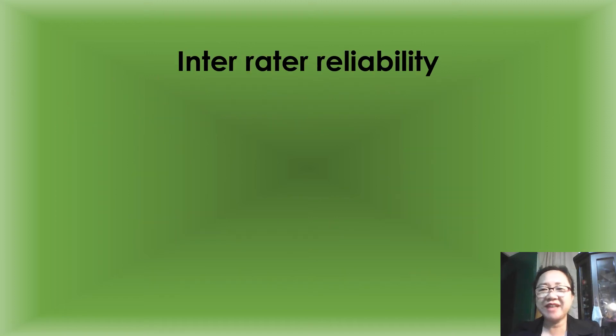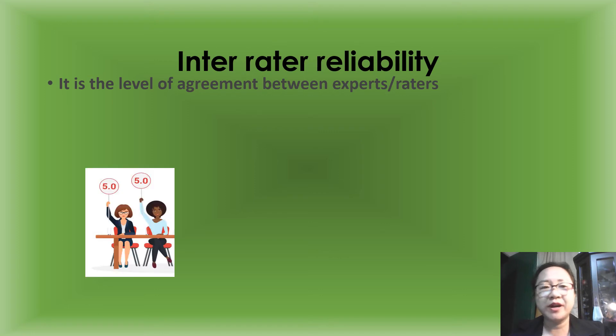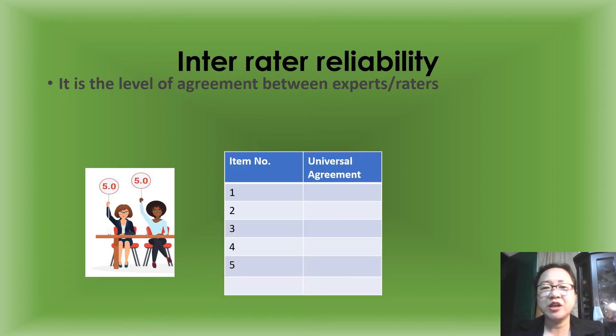Inter-rater reliability is the level of agreement between experts or raters. For example, we have here two observers or raters.